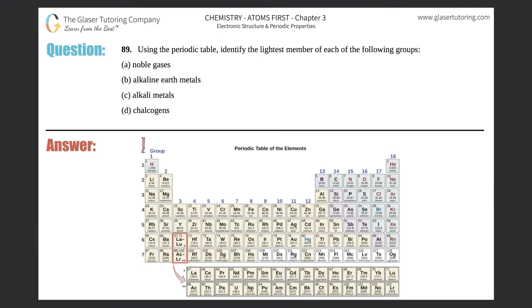Number 89: Using the periodic table, identify the lightest member of each of the following groups. I have A through D. I supplied a periodic table for you guys and I'm going to put A through D over here.